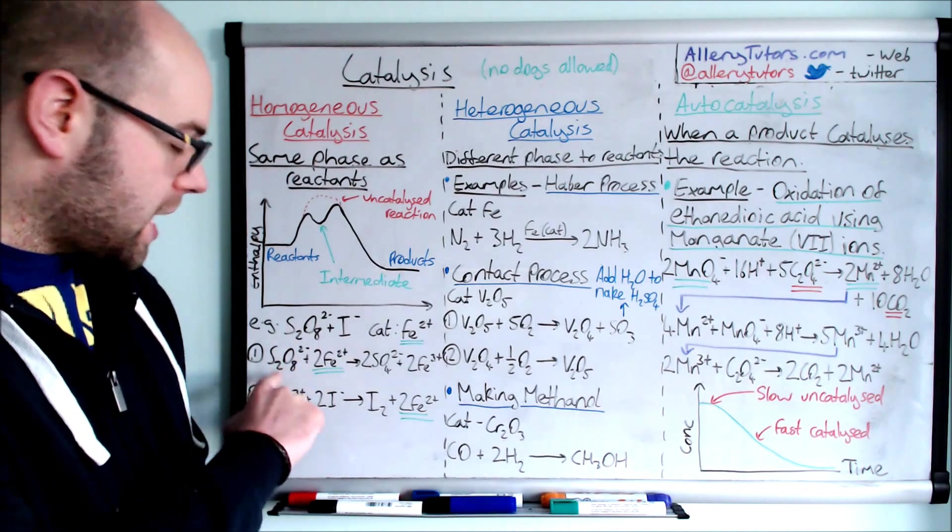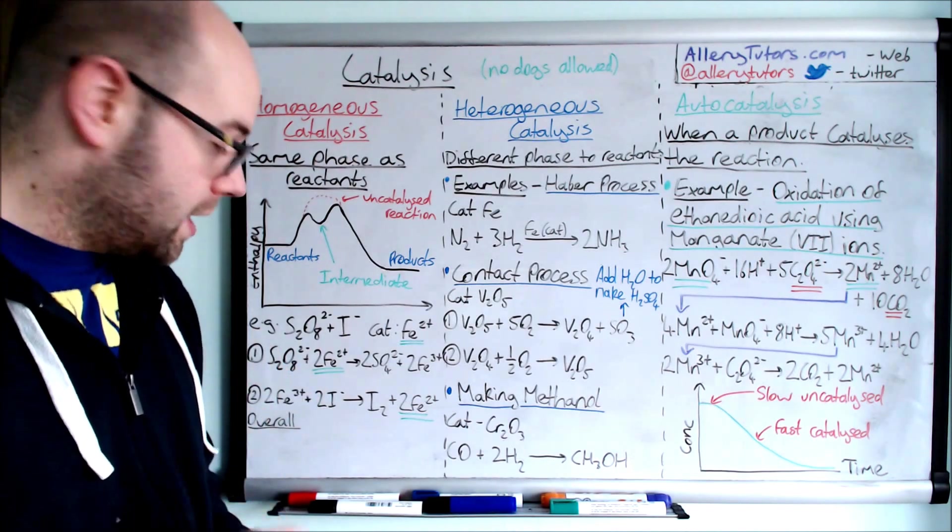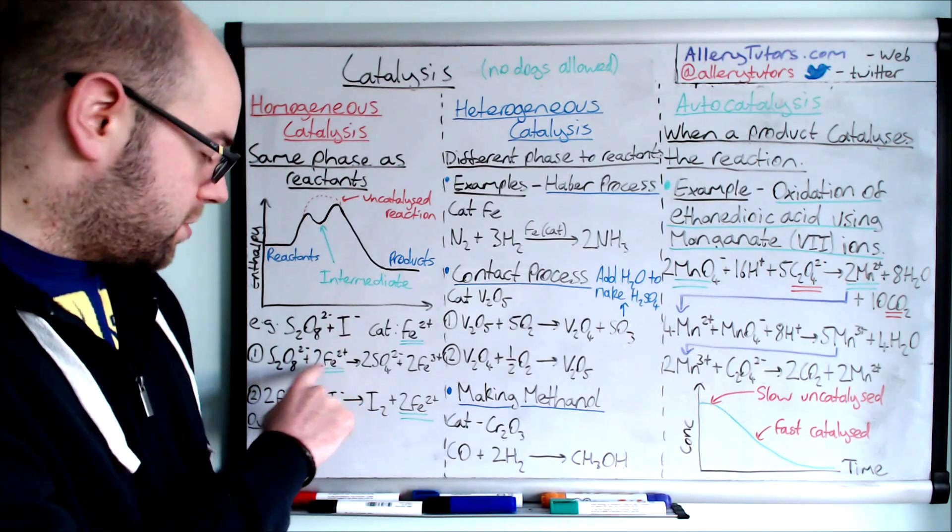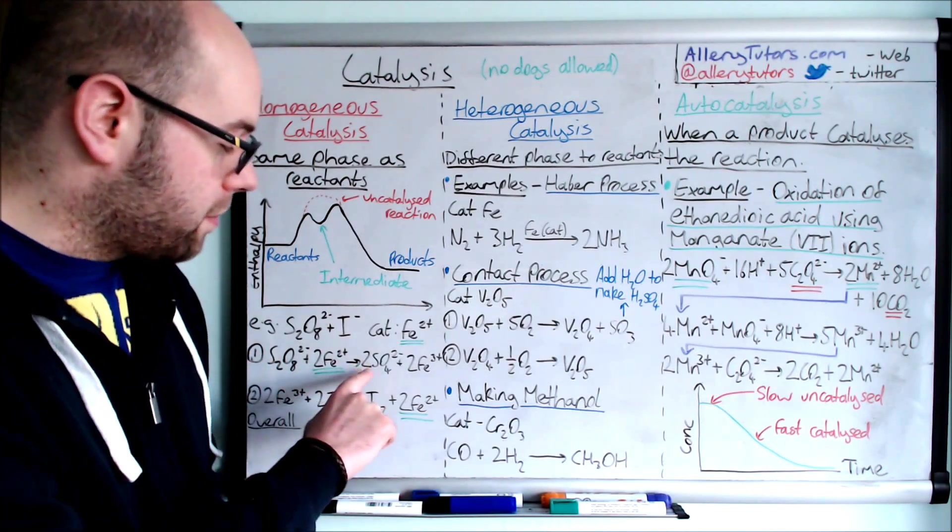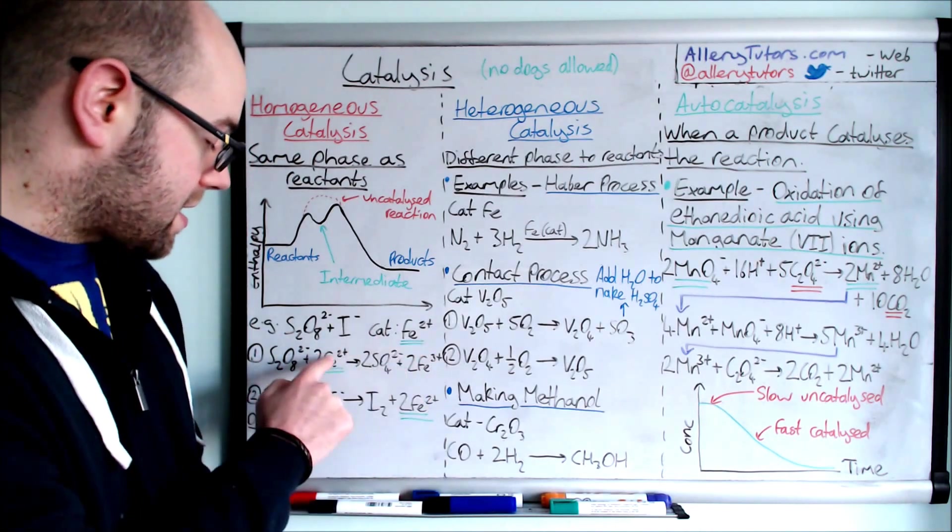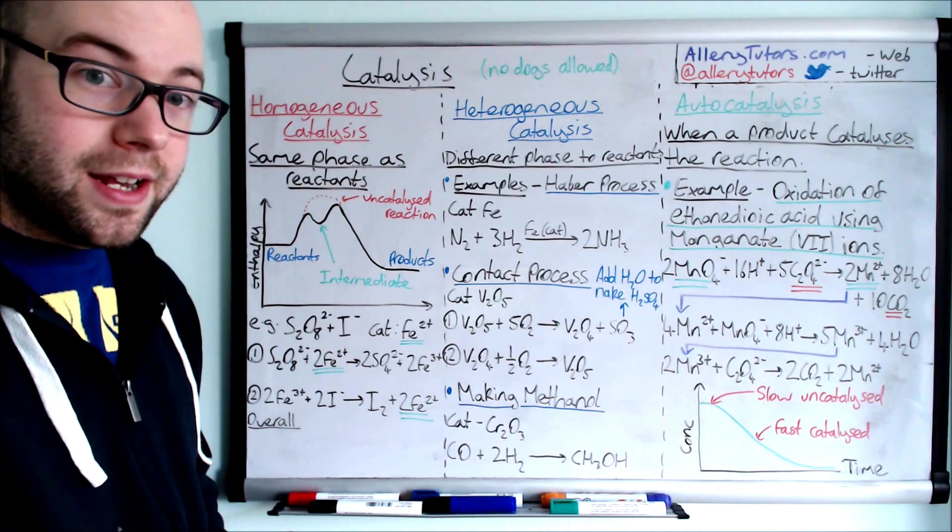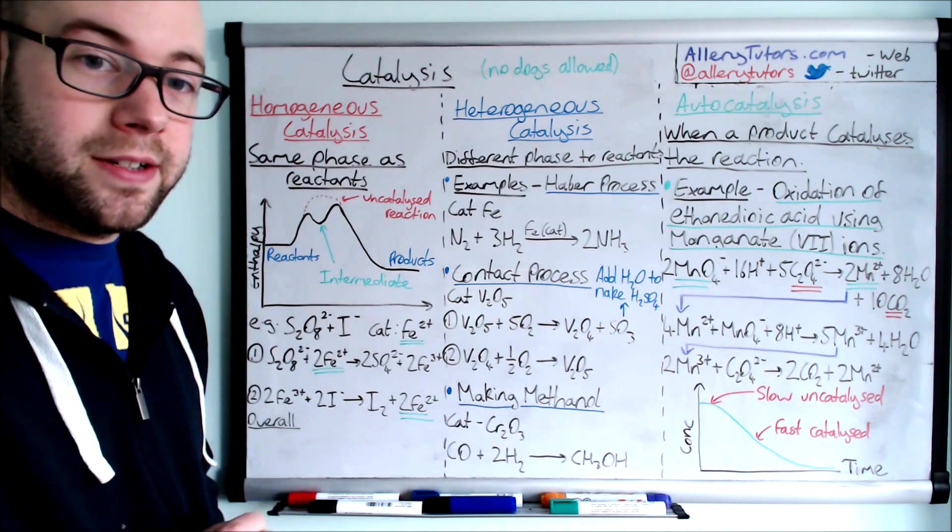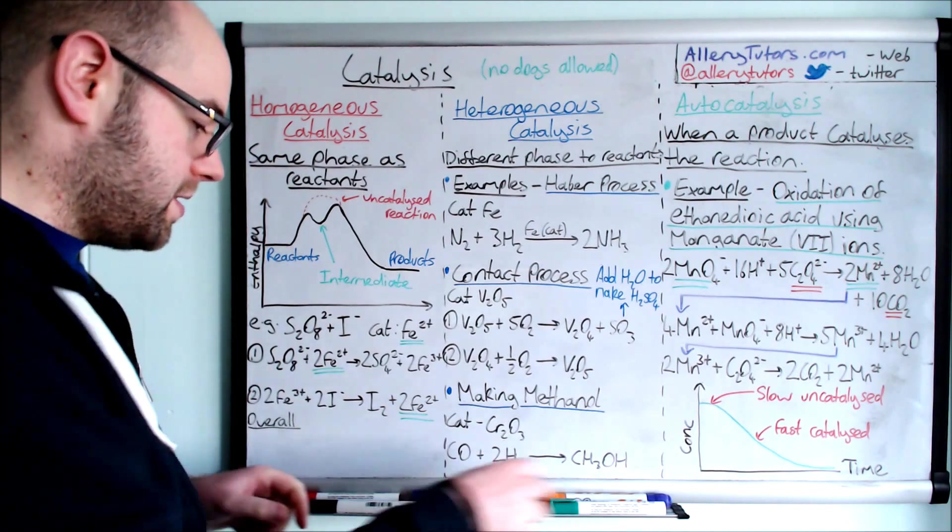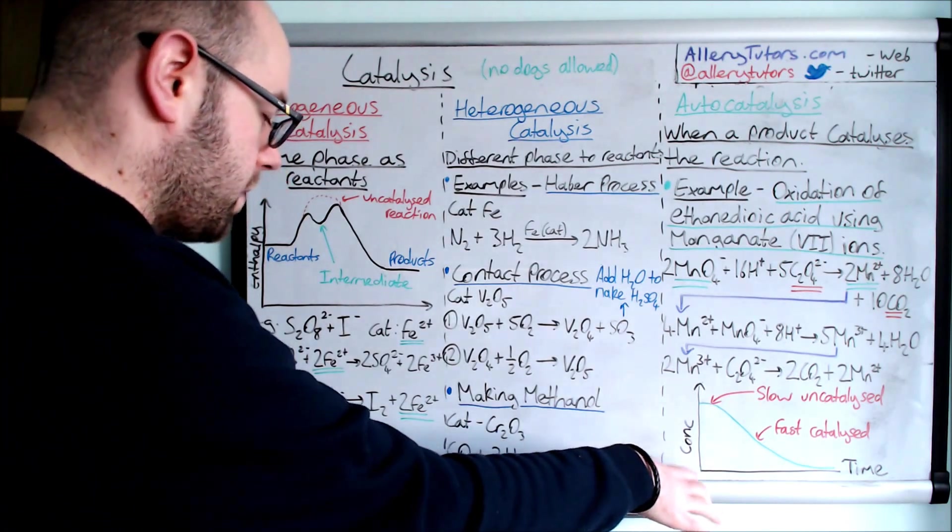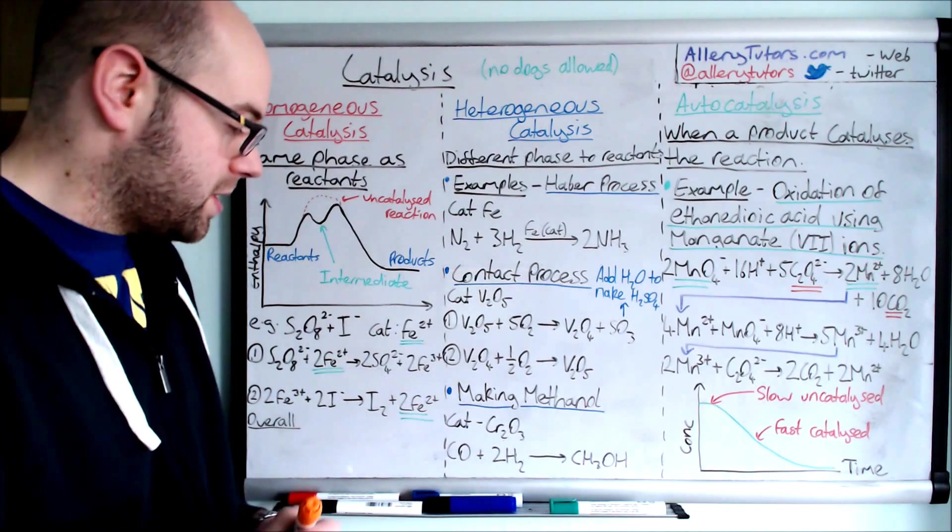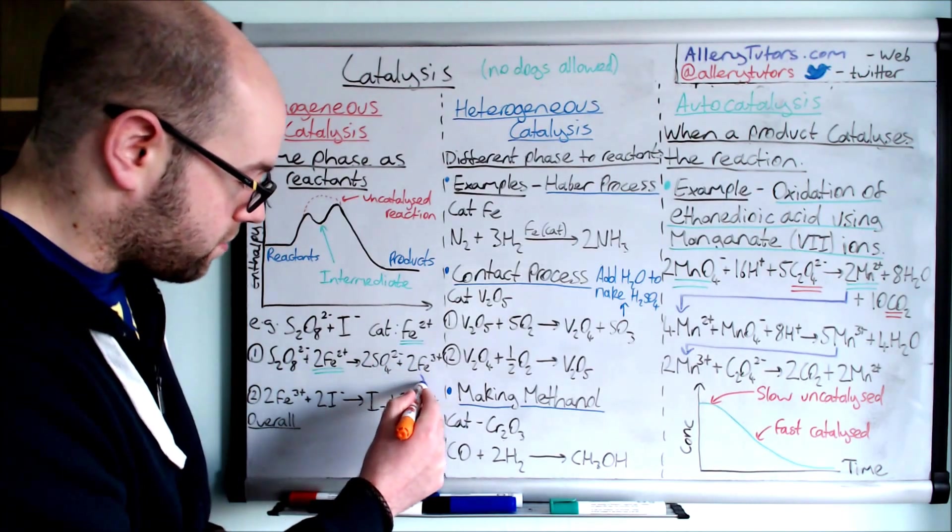Fe2+ will play a big role here and it occurs in two stages, hence the two bumps. Step one: we take the peroxodisulfate and the iron 2 catalyst 2Fe2+ and that will form sulfate ions and Fe3+. The catalyst is acting as a reactant in this case, but it's only reacting with one of the initial reactants, the peroxodisulfate. This forms our intermediate Fe3+.